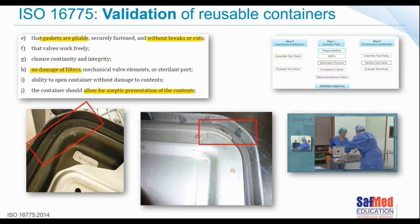The gaskets — the seal section — need to be pliable, securely fastened and without any breaks or cuts. Images shown include a gasket that is damaged and one with a gouge out of it — these must be inspected. Some containers have valve mechanisms; there should be no damage to the filters or valves. You must be able to open the container without damage to the contents, and the container should allow for aseptic presentation. Hopefully your container manufacturer will teach you how to open that particular container and remove the contents aseptically.